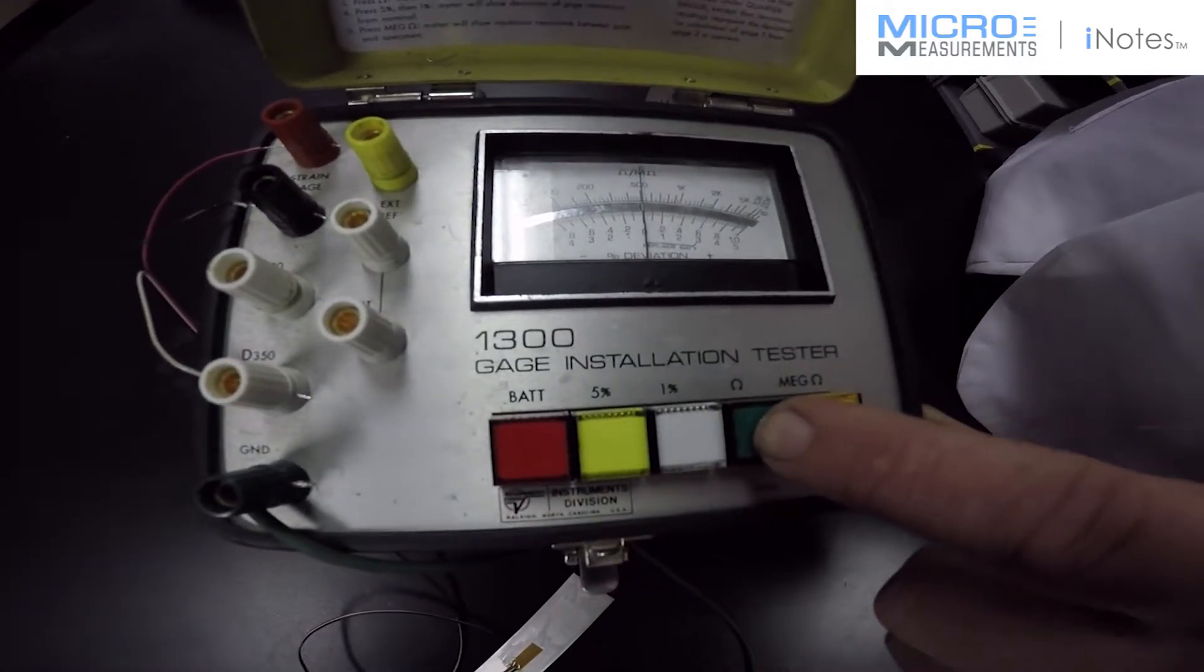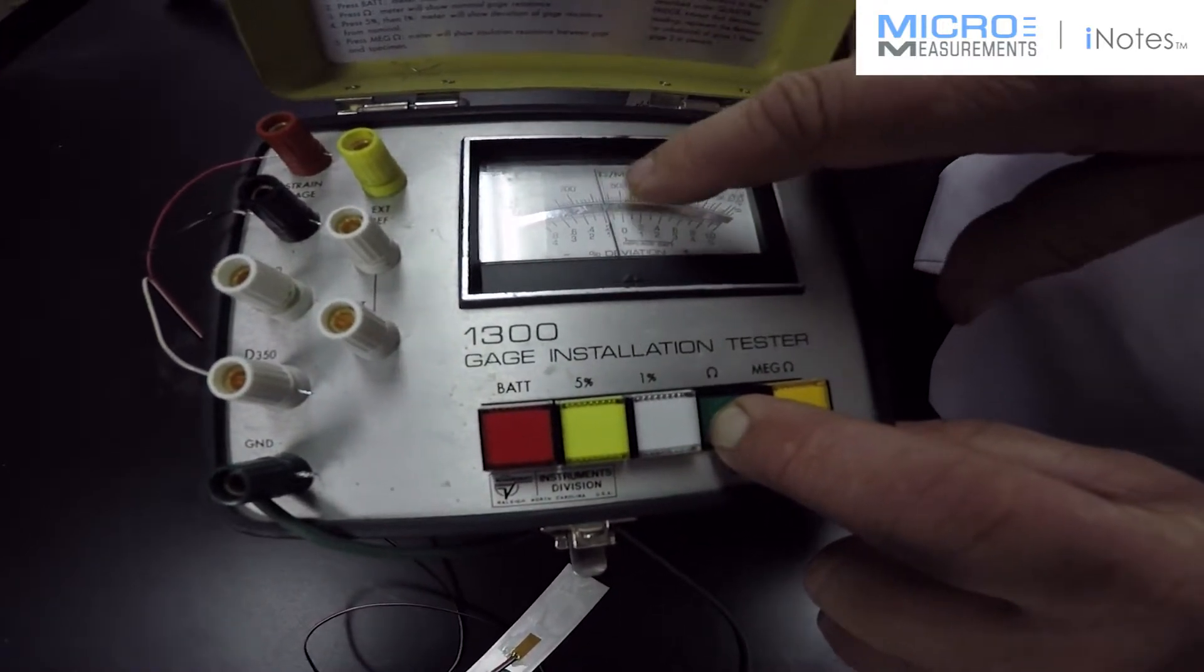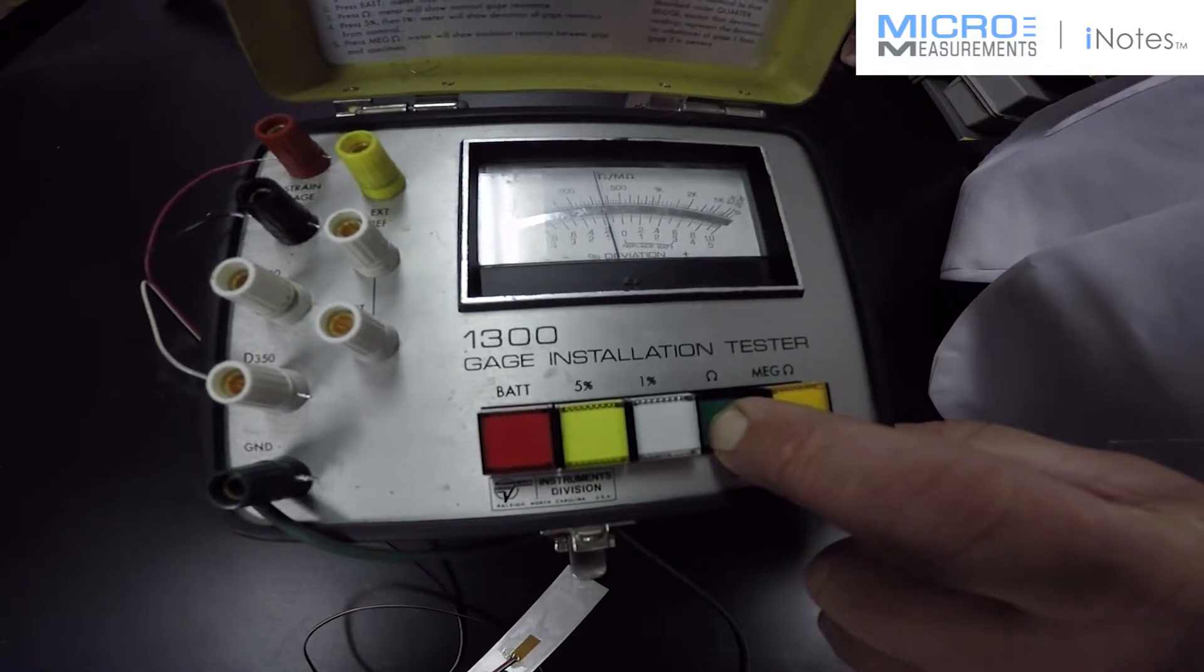If I want to know the resistance of the gauge, I can press the green button. This is the ohm button. And on the top scale, you can see that this is 350 ohms.